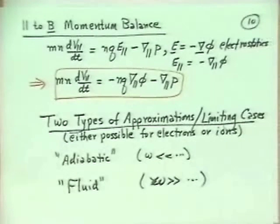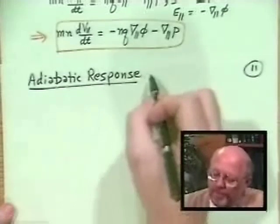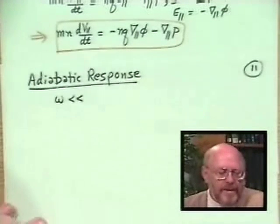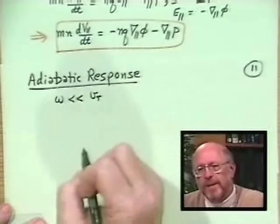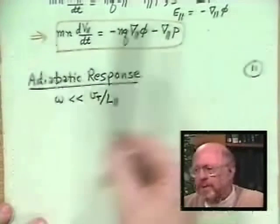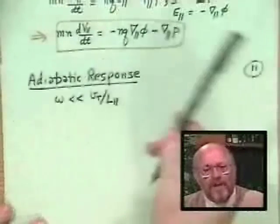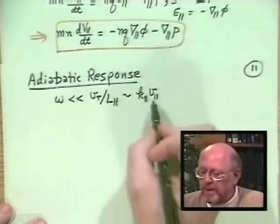Let's now define what we mean by the adiabatic response. In some sense, omega much less than something means omega is much less than the typical parallel velocity divided by some parallel gradient scale length — so it's low frequency compared to how fast particles can oscillate back and forth and smooth things out. This could be k_parallel v_parallel for a wave.